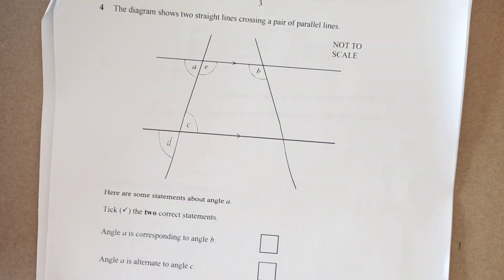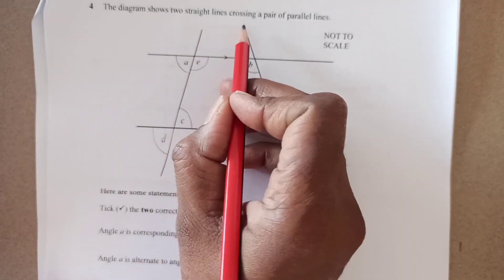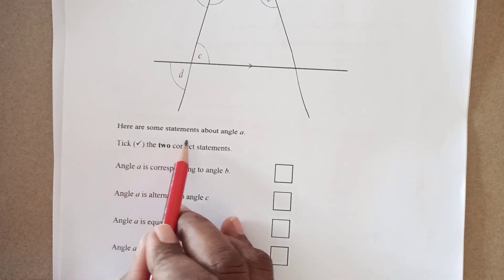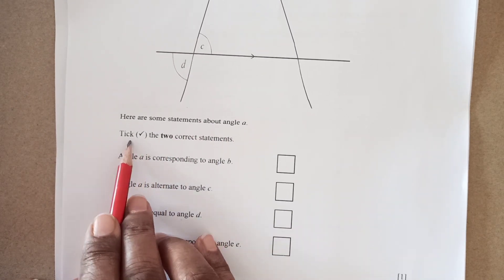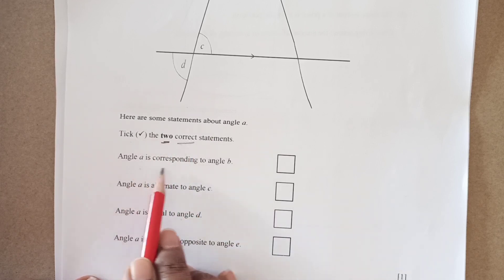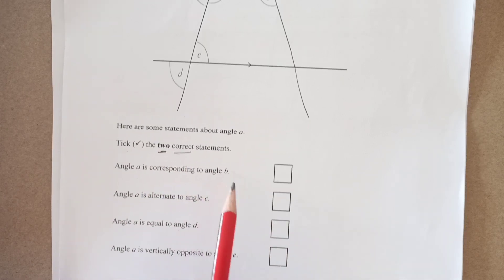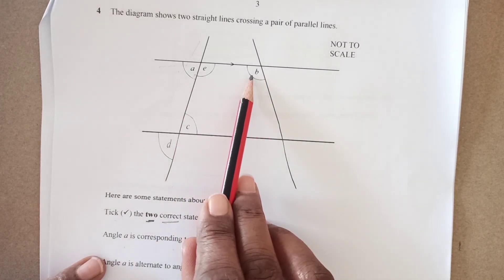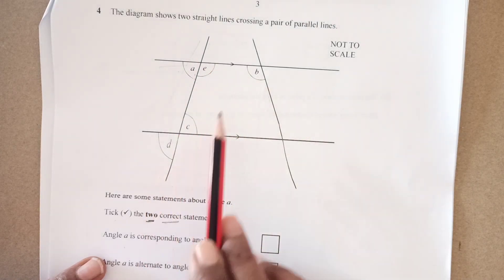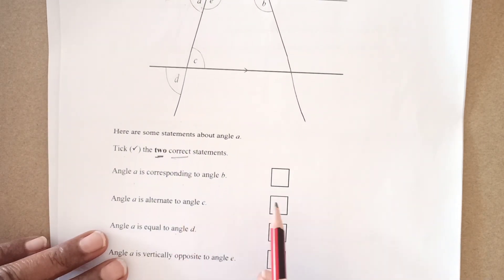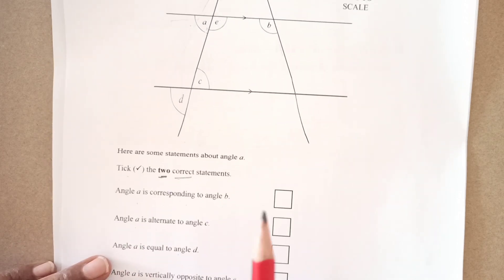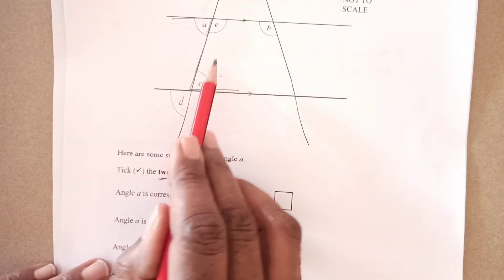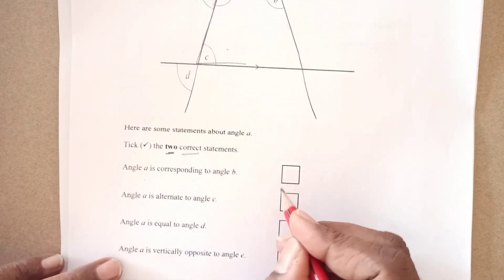Number 4 the diagram shows two straight lines crossing a pair of parallel lines. These are parallel lines and these two lines are intersecting. Here are some statements about A. Take the two correct statements. Angle A and B corresponding to angle B. Angle A is corresponding to angle B. No. Because this angle is below the line and this is also below the line but these lines are not parallel. So first one is not.